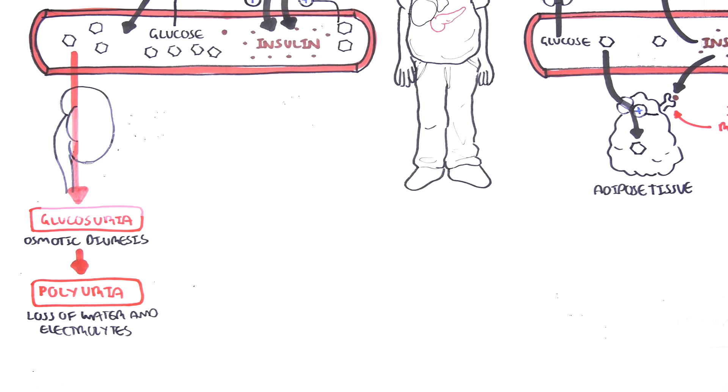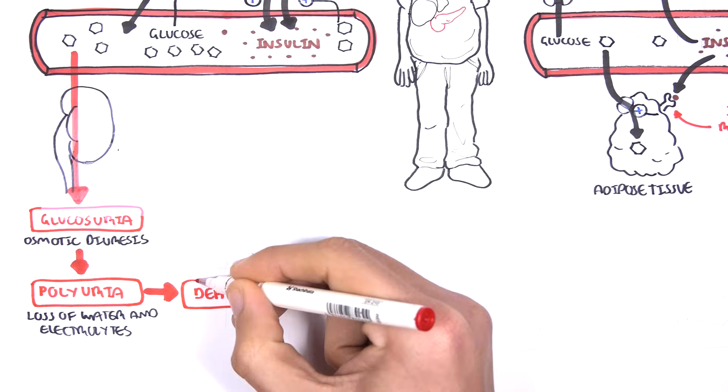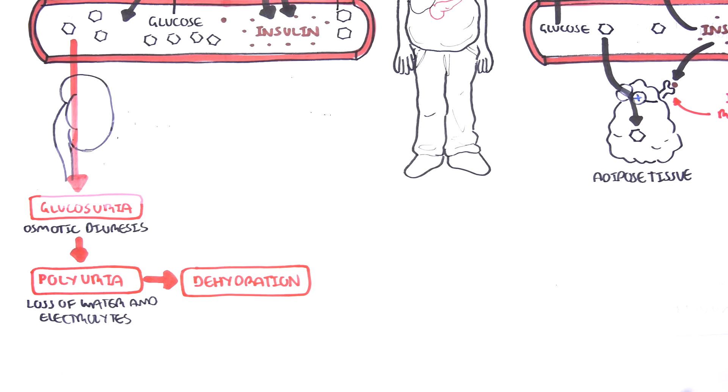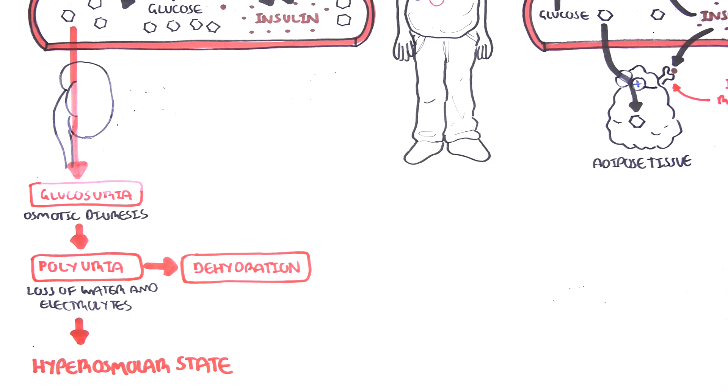With constant polyuria, you get loss of water and you get loss of electrolytes. The loss of water and electrolytes leads to two main things. One, dehydration because of the loss of water. And two, hyperosmolar state. Hyperosmolar state is a medical emergency which will not be really discussed here.